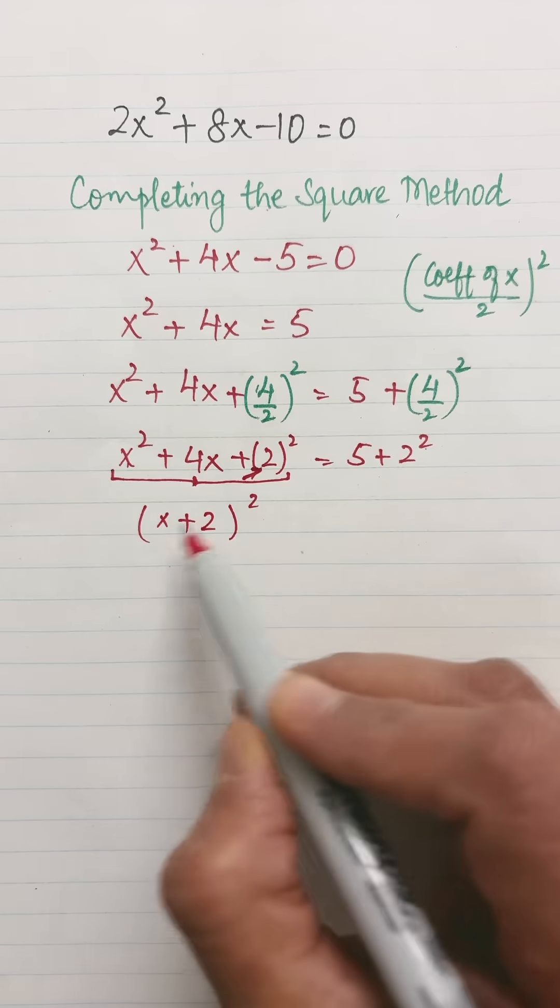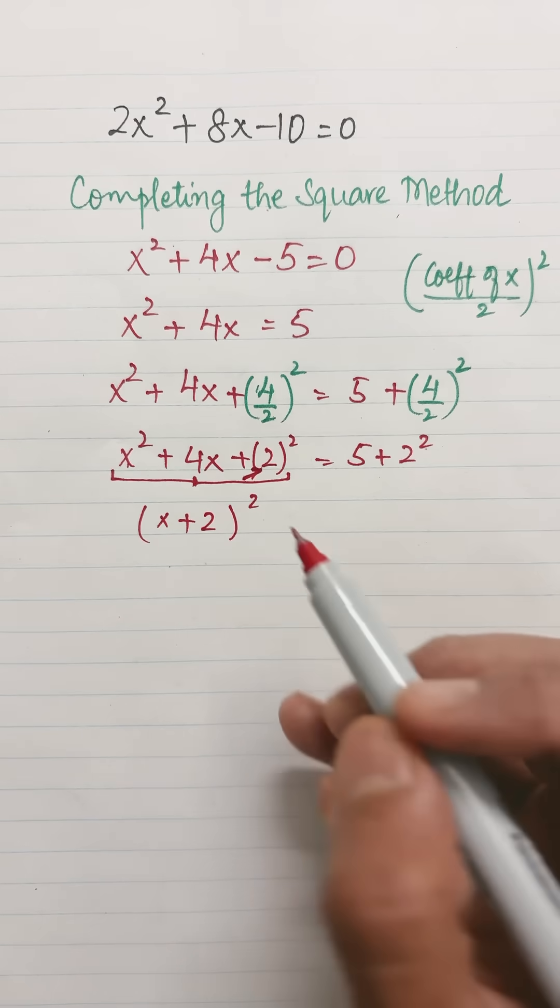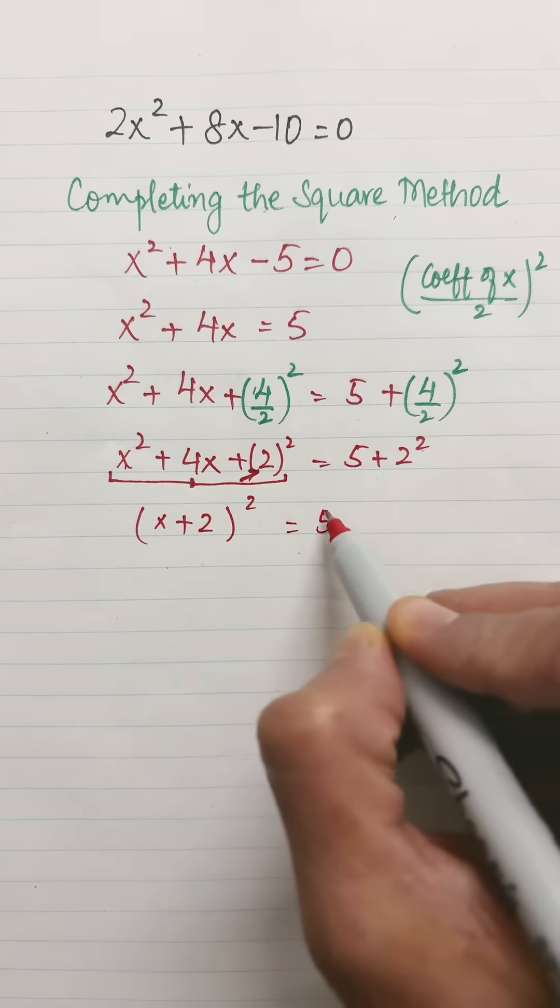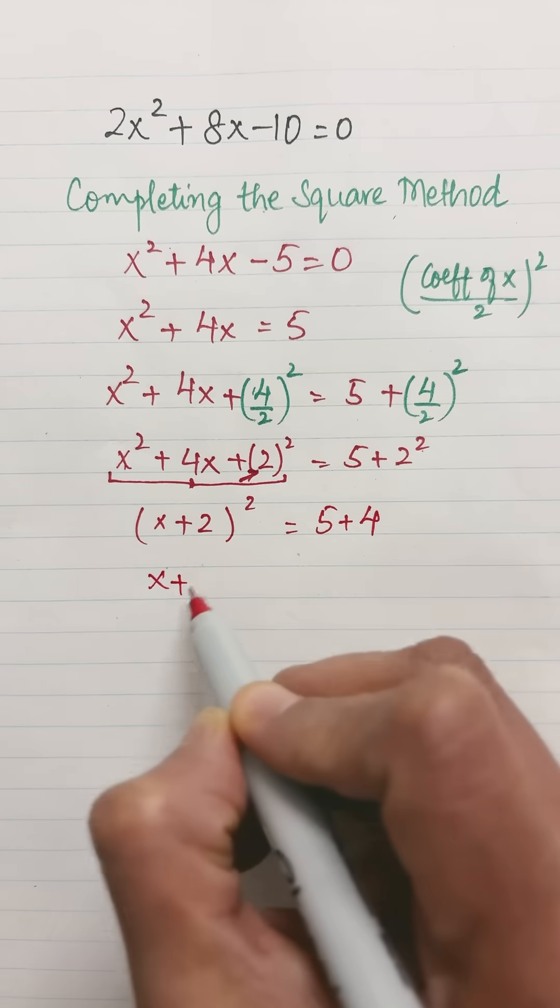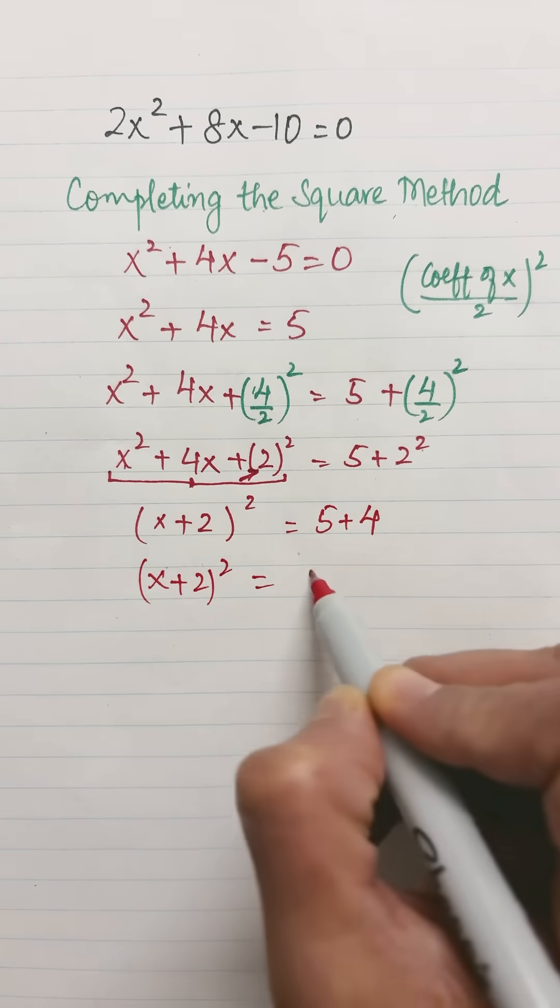That is why this method is called completing the square method, because at this step I have written the left-hand side as the square of the binomial x + 2, equals 5 + 2² is 4. So (x + 2)² = 9.